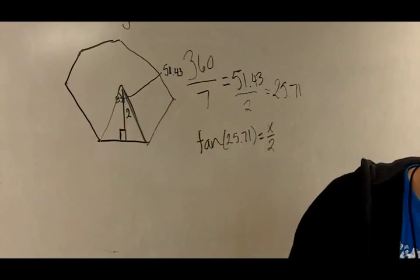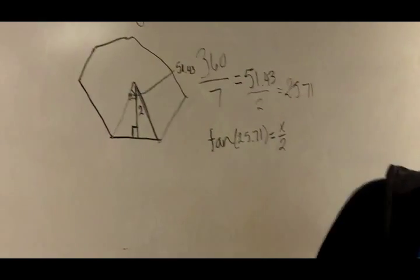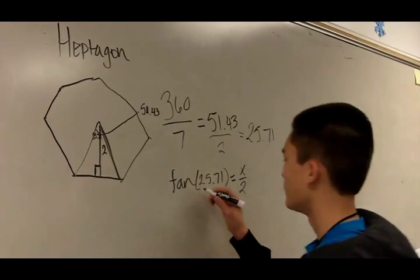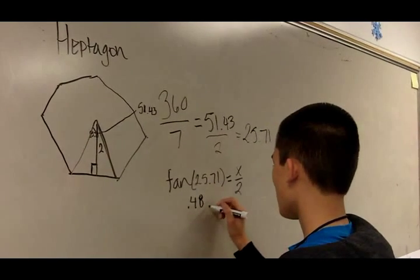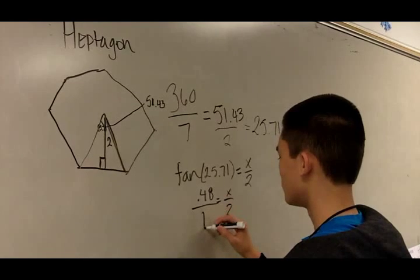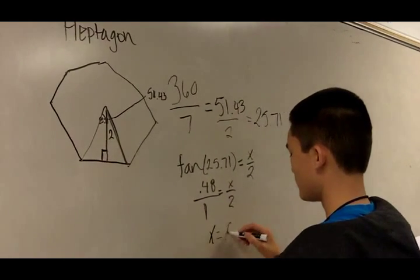And tangent of 25.71 is 0.48. And you put it over 1. And then x will equal 0.96.